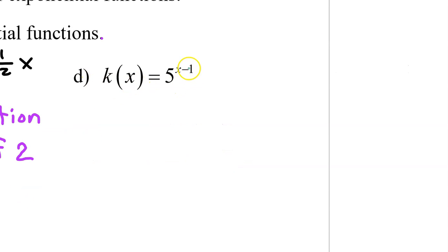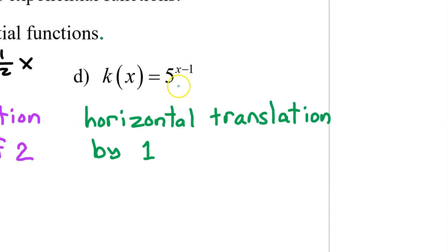Just like in Part A, adding or subtracting inside the exponent will be a horizontal translation. Subtracting 1 in the exponent gives us a horizontal translation by positive 1.